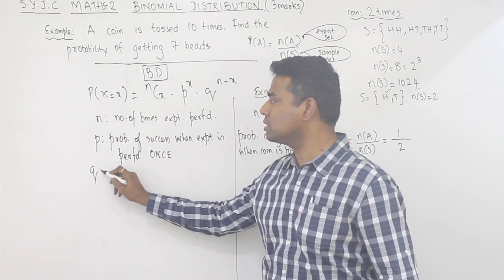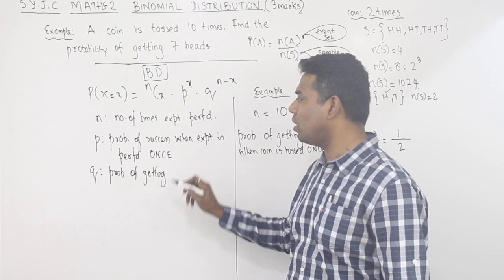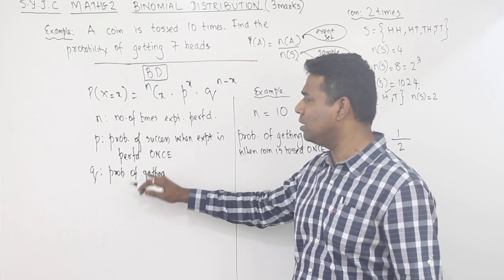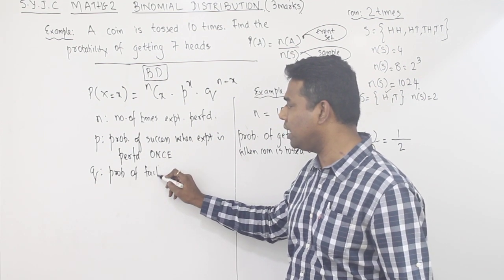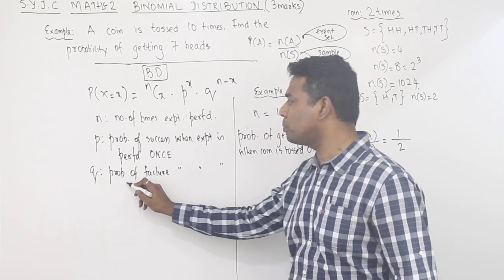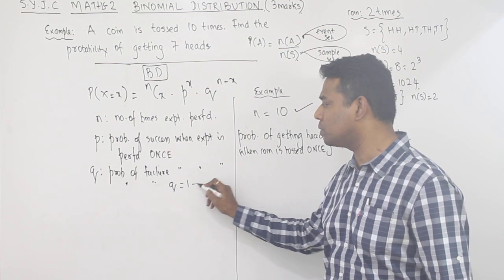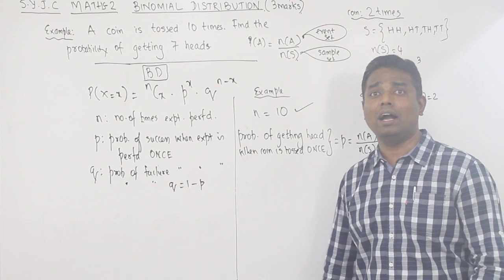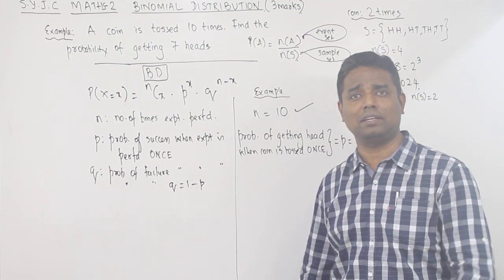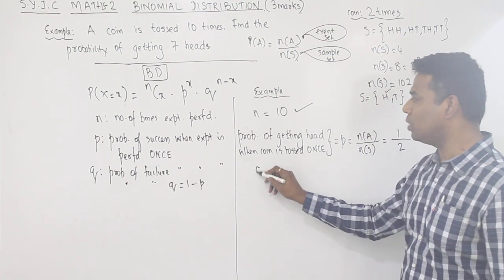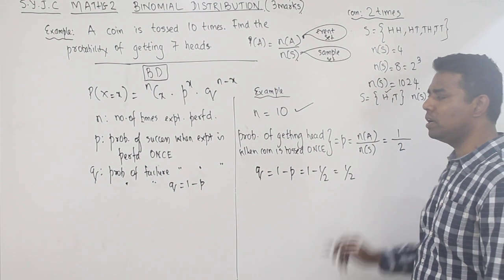What is Q? Q is the probability of failure when the experiment is performed once. The shortest way is Q = 1 − P. If the success chance is 70%, failure is 30%. Same way here: Q = 1 − 1/2 = 1/2. So we have n, P, and Q.